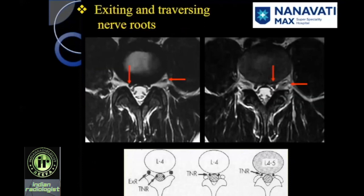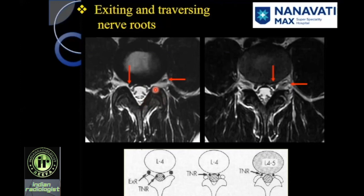Repeating the concept of exiting and traversing nerve roots. At the L4-5 level, you have the L4-5 disc nucleus pulposus, L4-5 disc annulus fibrosus, thecal sac, superior articular facet of L5, inferior articular facet of L4, facet joint, and ligamentum flavum. This is the traversing nerve root — at L4-5 level, L5 is the traversing nerve root. This is the exiting nerve root, so it's L4 at the L4-5 disc level. The importance of this distinction is described later when we talk about herniations of discs at different locations.